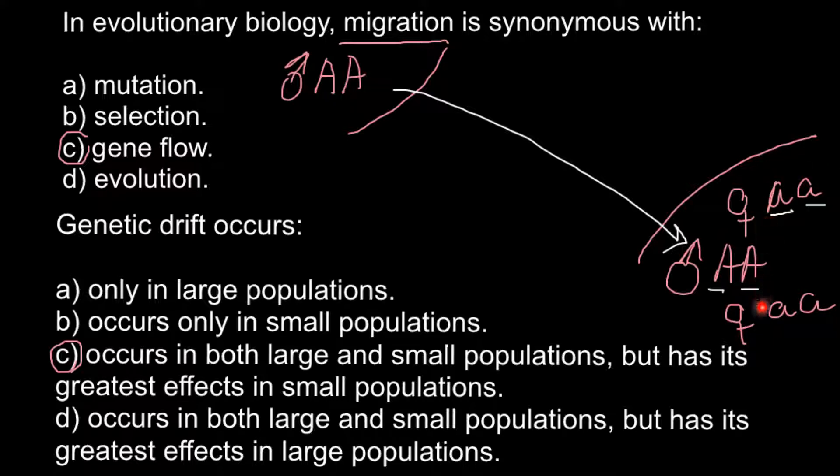So now you see that two thirds would be recessive allele a, and after migration of this male, only one third would be dominant allele A in this gene pool.